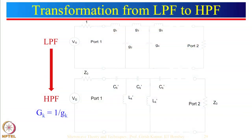In the previous lecture we had seen how a low pass filter can be transformed to a high pass filter. For example, if you want a Butterworth or Chebyshev high pass filter, you start the design with the corresponding low pass filter and find all the G parameters. All inductors become capacitors and all capacitors become inductors, and the high pass G parameters are simply obtained by 1 divided by G_k, where G are the parameters for the low pass filter. Once you get the new G parameters, you can use impedance and frequency transformation to get the values of C and L.